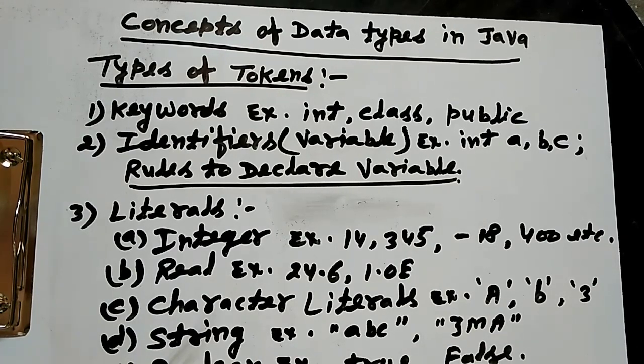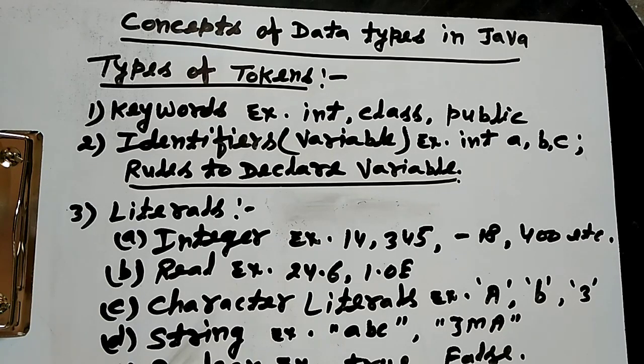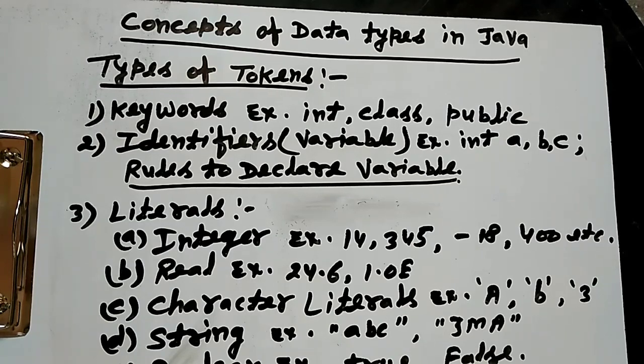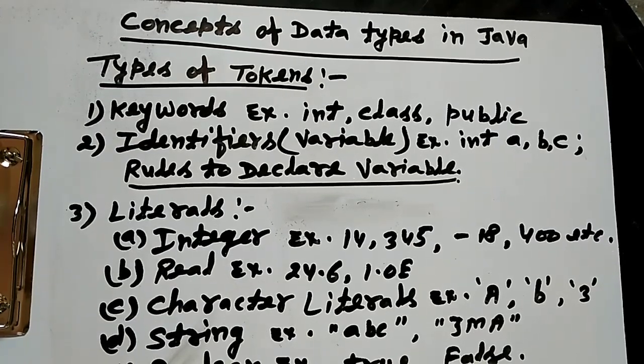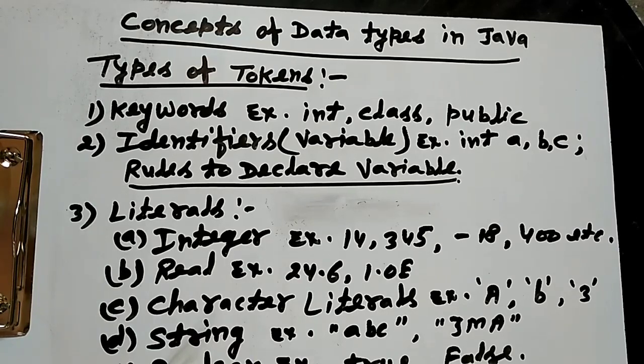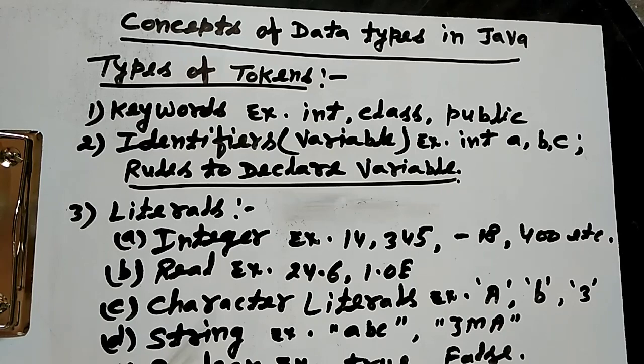A space, a special character, a special symbol, not used in the identifier. We cannot use the reserve word as the identifier. So, these are the rules to declare the identifiers.